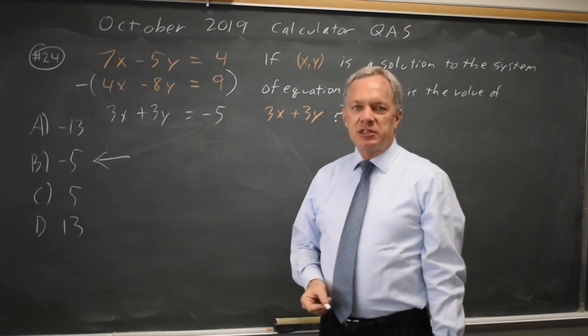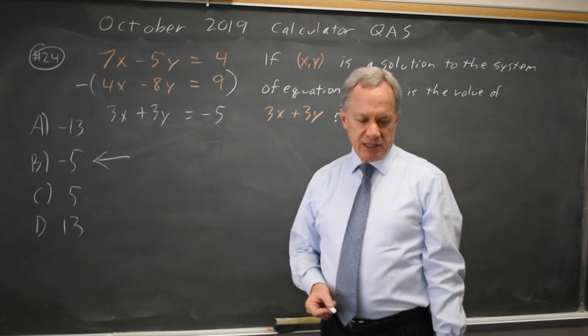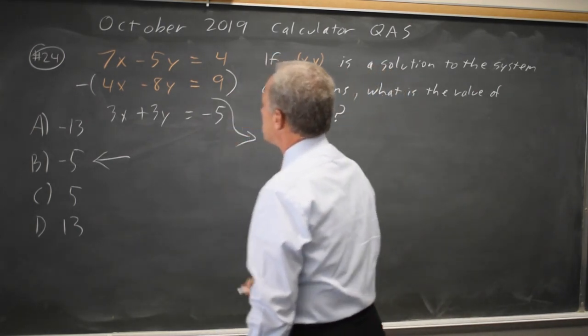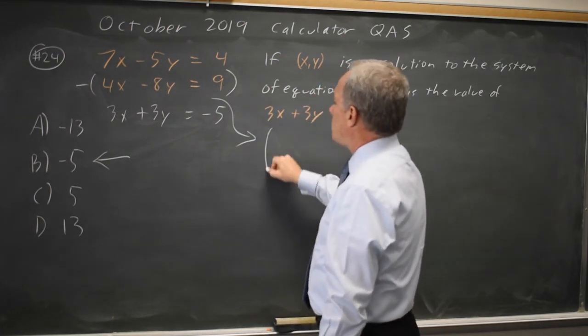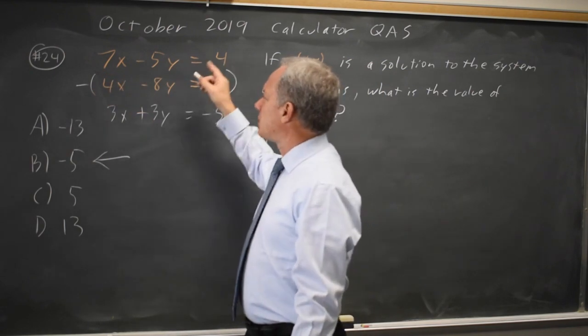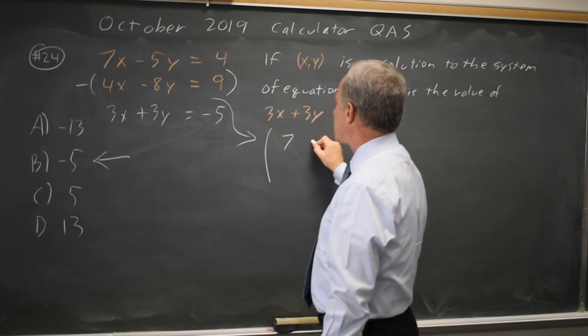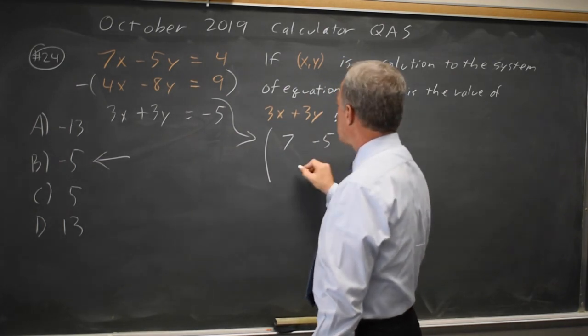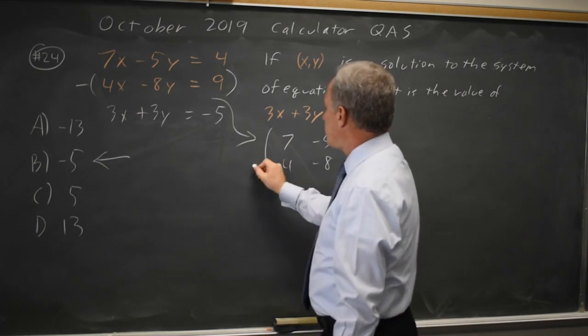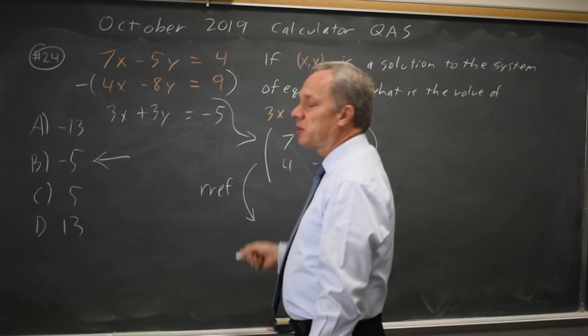If you don't happen to see that trick, and you shouldn't be taking a whole lot of time looking for tricks on the SAT, you can also solve this using matrices. If you have the variables in the same order on the left-hand side equals constants on the right, you can write this in matrix form as 7, negative 5, positive 4, 4, negative 8, positive 9. If you then take reduced row echelon form of that matrix...